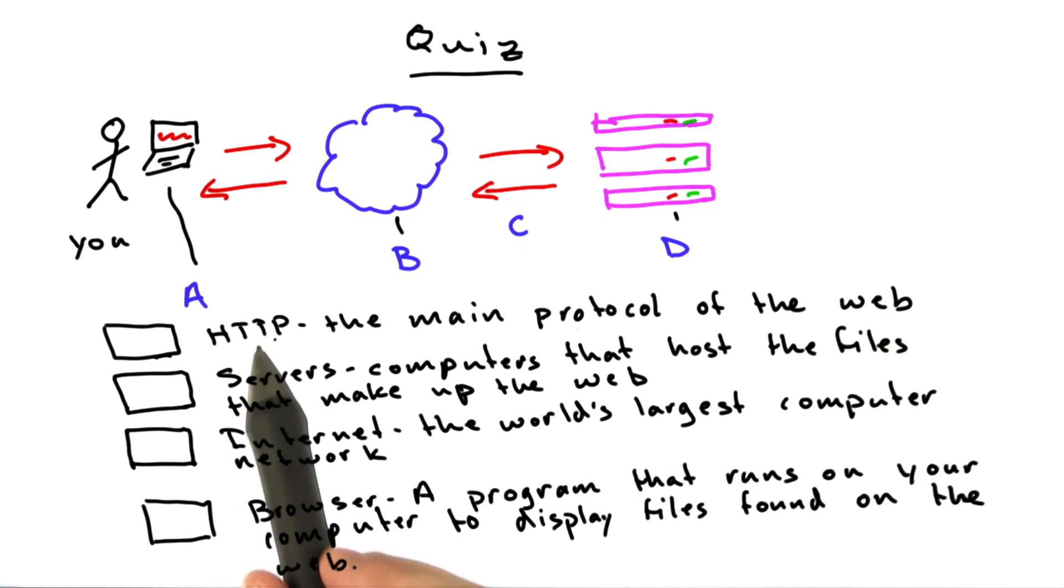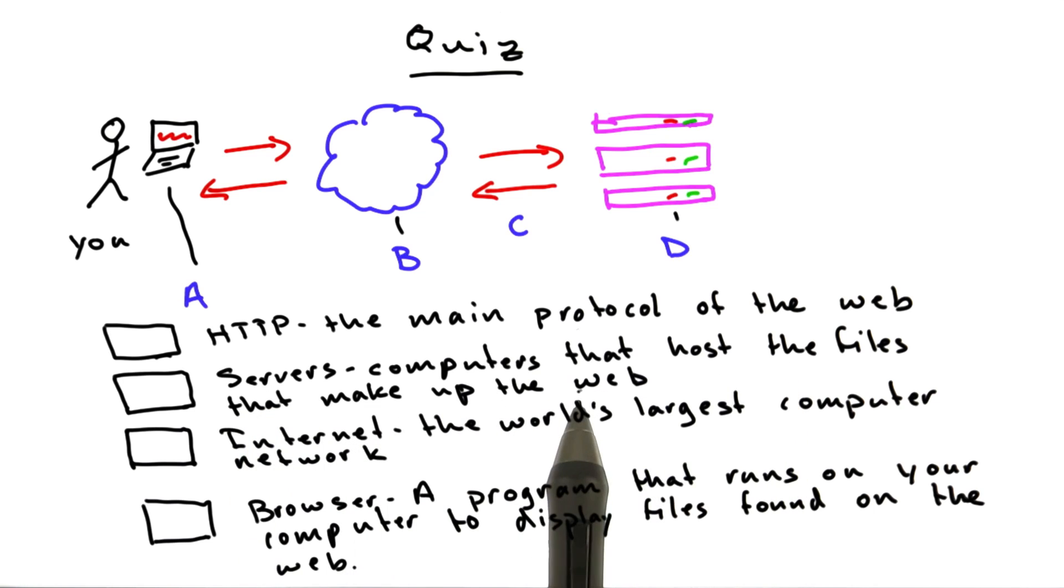Your options are HTTP, the main protocol of the web; servers, computers that host the files that make up the web; the internet, the world's largest computer network; and your browser, a program that runs on your computer to display files found on the web.